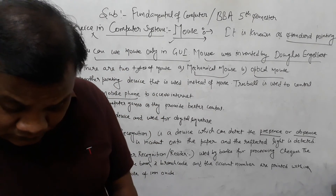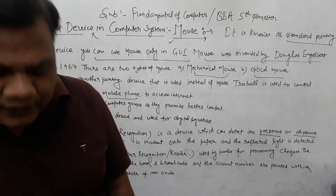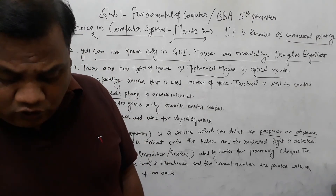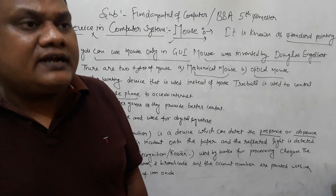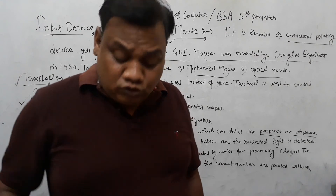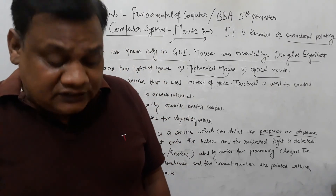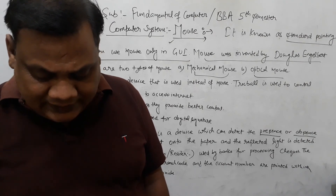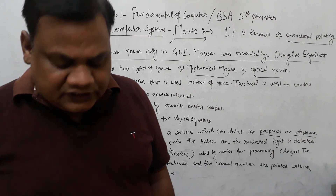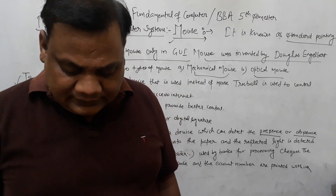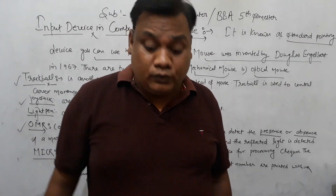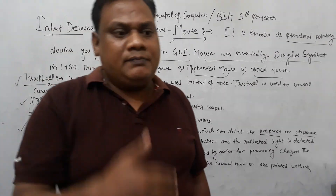Our next device is OCR — Optical Character Recognition or Reader. OCR is the recognition of printed or written text characters. It involves photo scanning of text character by character, analysis of the scanned image, and translation of character images into character codes. OCR is used by libraries to digitize and preserve their holdings. Next is the barcode, which is a small image of lines.